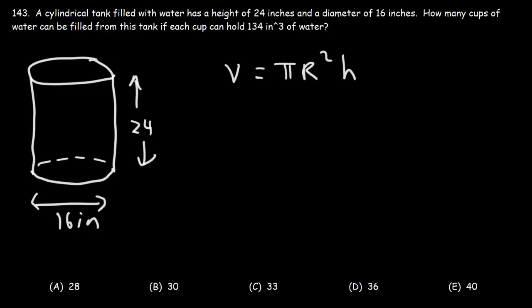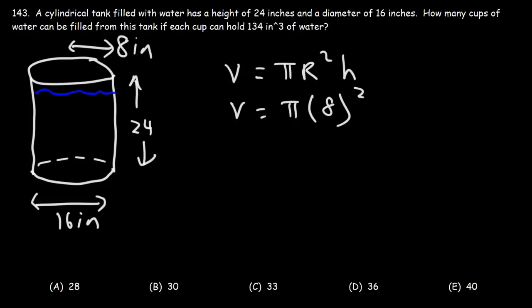The volume of a cylinder is πr² times the height. To find the number of cups, we divide the tank's volume by the volume of each cup. The radius is half the diameter: half of 16 is 8. So the volume is π times 8 squared times 24, which equals 1536π cubic inches.